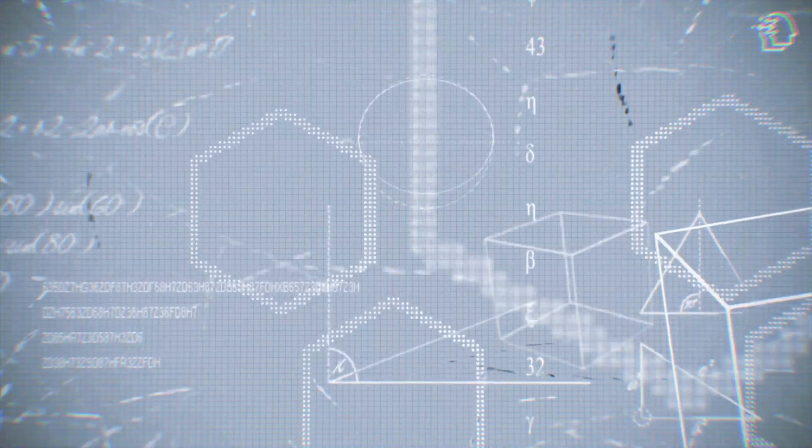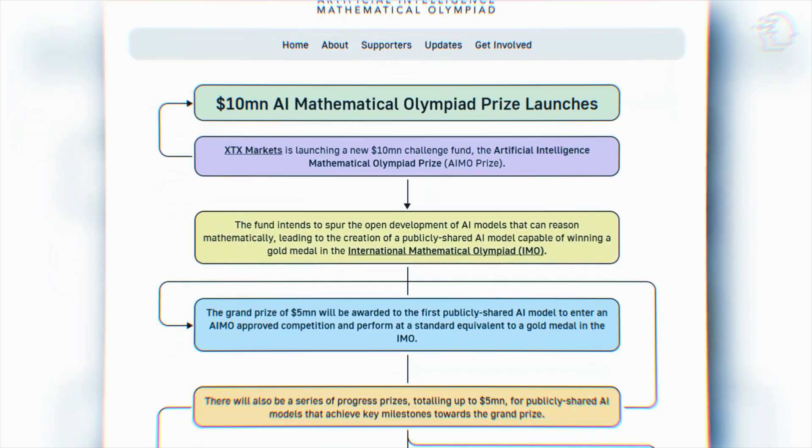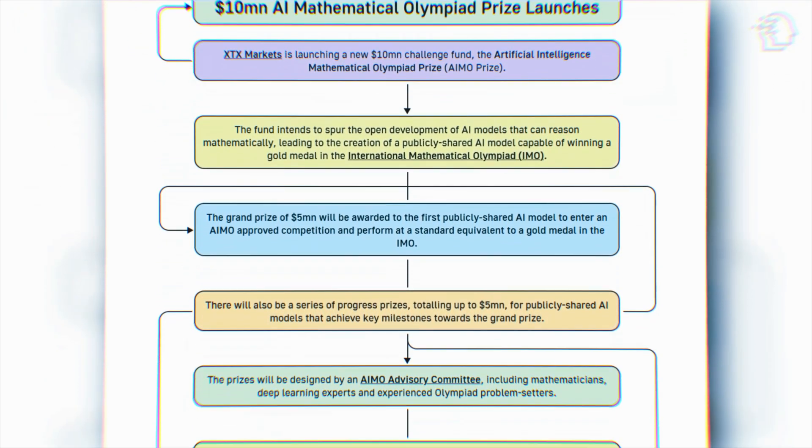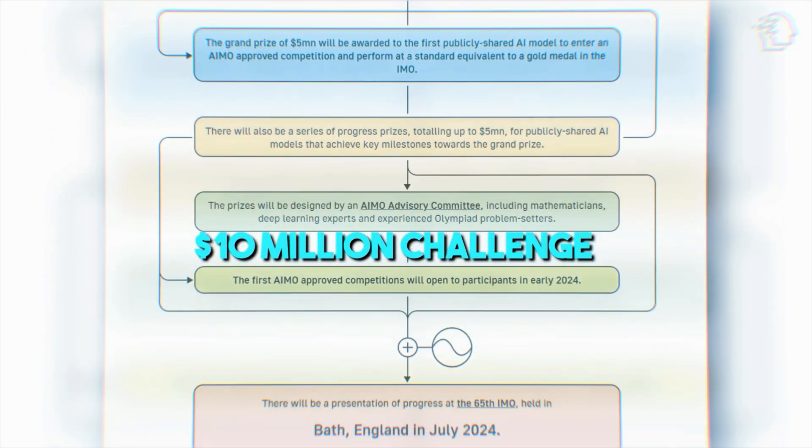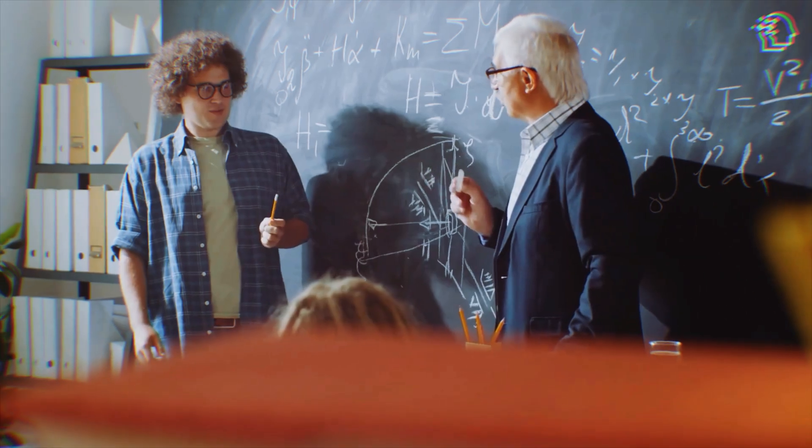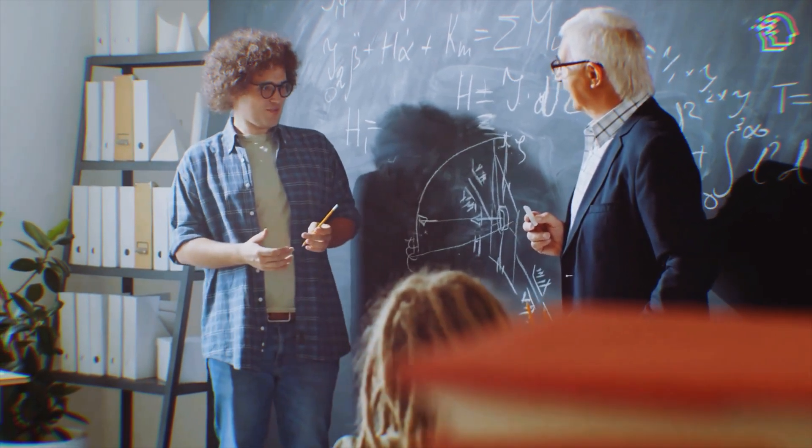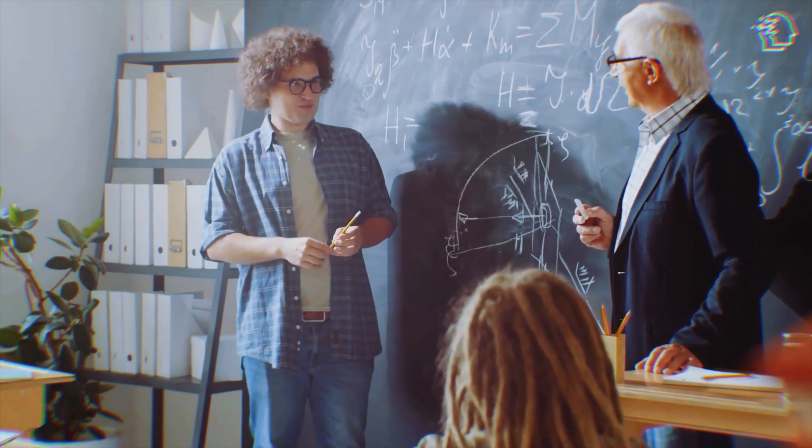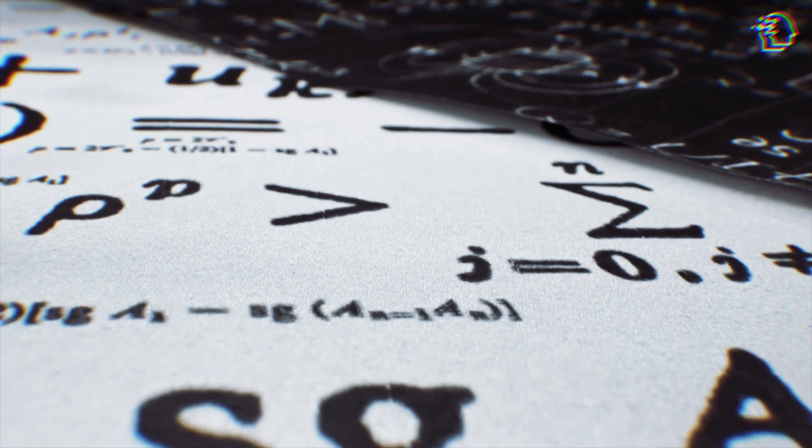Before we dive in, let's set the stage. The AIMO prize with its eye-popping $10 million challenge was thrown to spur the development of AI that could conquer the IMO. This competition is a battlefield for high school geniuses, especially in geometry. In this challenging arena, DeepMind introduced AlphaGeometry.